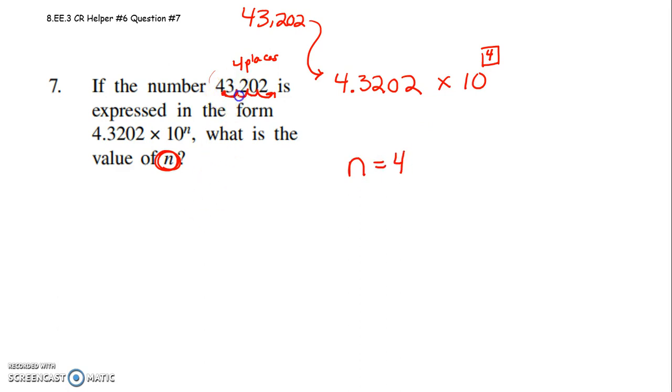Because I'd have to move that decimal point over 1, 2, 3, 4 places if I took it from scientific notation back to standard form. I hope that helps. And you can see that here. They give it to you in scientific notation. 1, 2, 3, 4 places over to relocate it back to standard form.